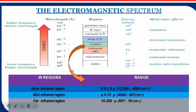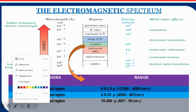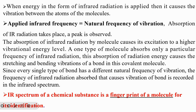For near IR, the wavelength range is 0.8 to 2.5 microns. When we study about IR, we check the wave number. The wave number for near IR region is 12,500 to 4,000 cm⁻¹. For mid IR, it is 4,000 to 667 cm⁻¹. And for far infrared, it is 1,500 to 200 cm⁻¹.